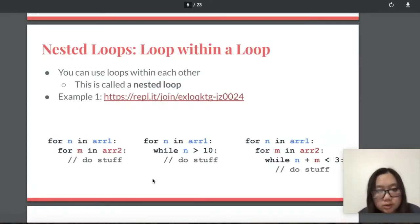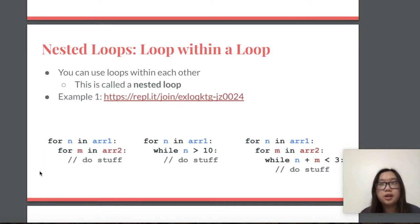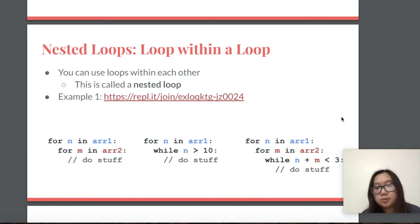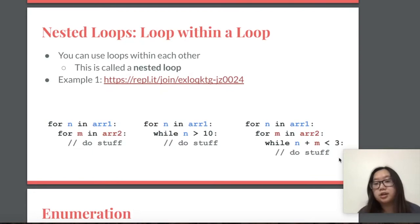Moving on to some extra examples. For the first example, imagine you have two arrays, array one and array two — for each value in array one you run through all the values in array two. For the second example, for each value in the first array, while n is greater than 10 you execute the code, and it's assumed that n is being decremented so it doesn't become an infinite loop. For the third example, for each value in array one, all values in array two are run through, except while n plus m is less than three the code executes, and either n or m must be incremented to avoid an infinite loop.